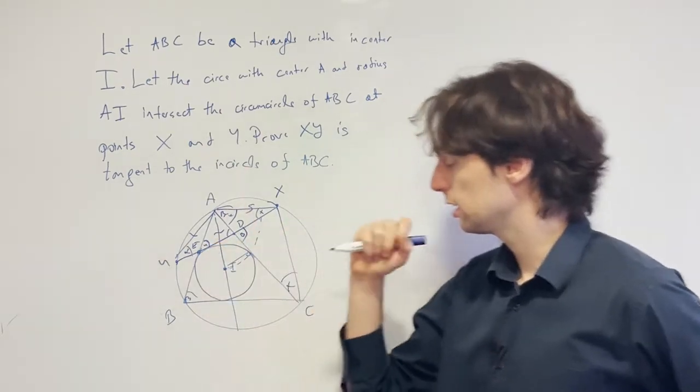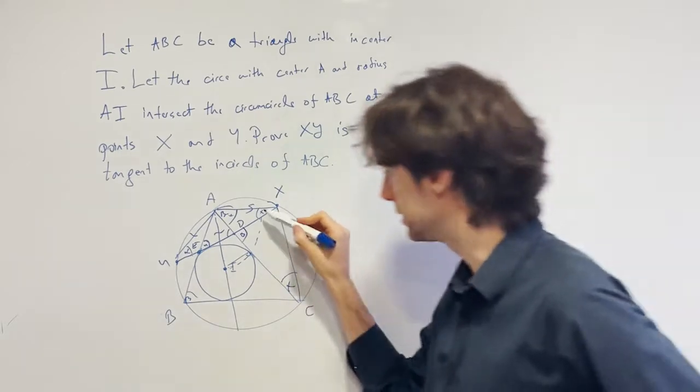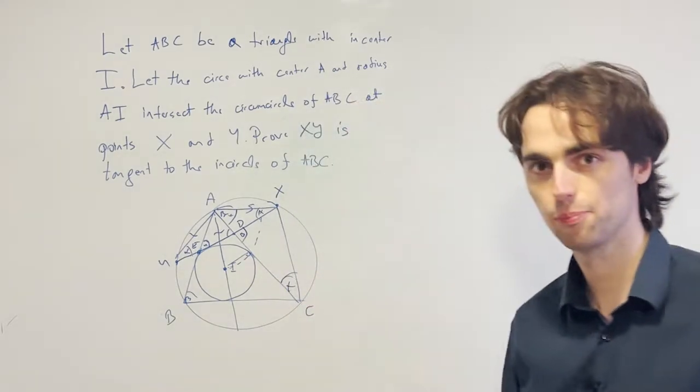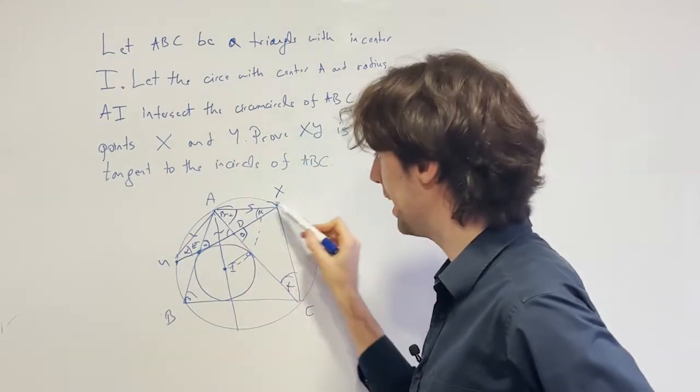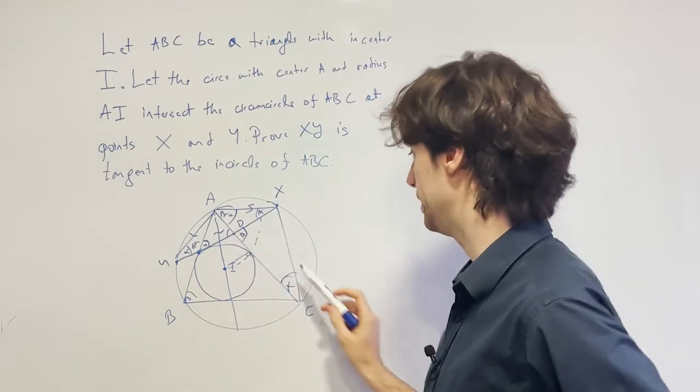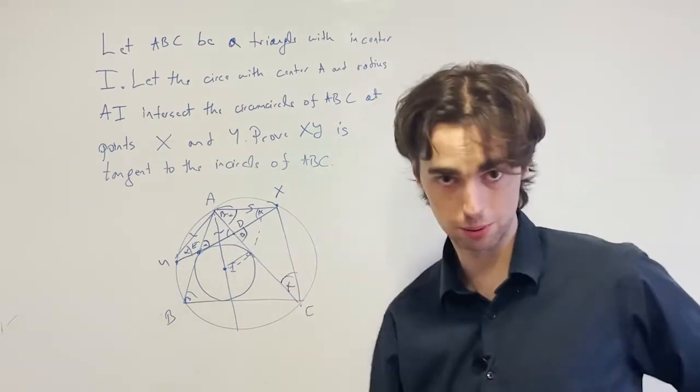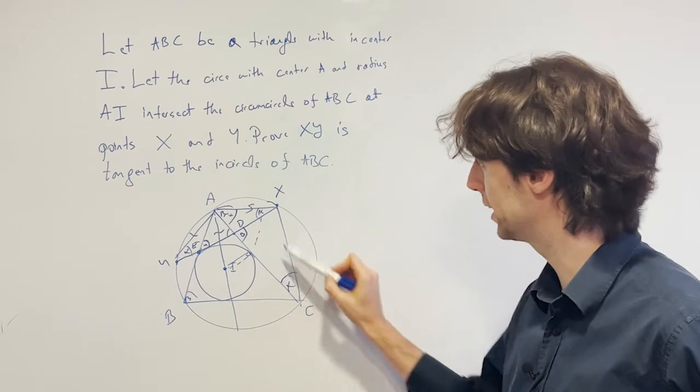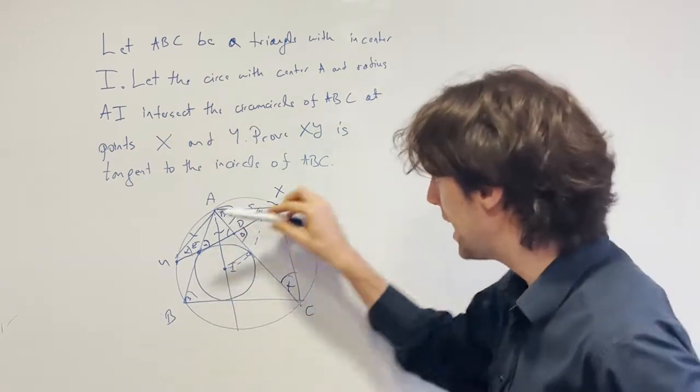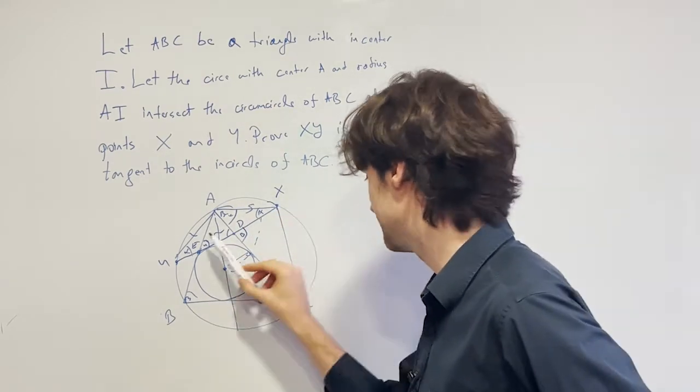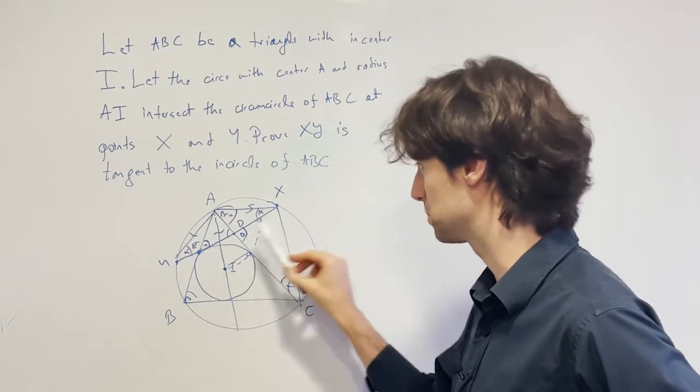Namely, what we have from AX is AY, we get this is X, and we get this is X. Now what do we get? We get AXD and ACX are similar because of the angles. Why? Because you have X and X. Or in other words, AX is tangent to XDC, to that circumcircle.